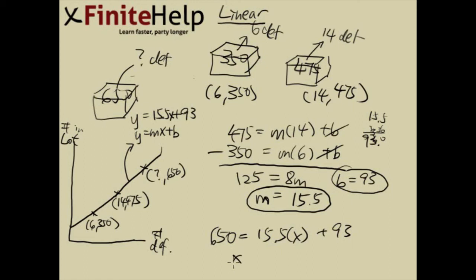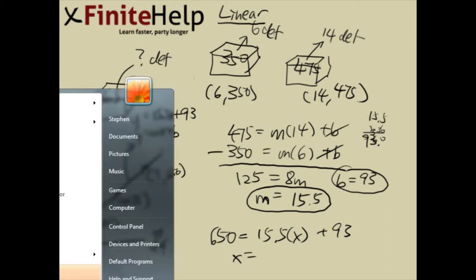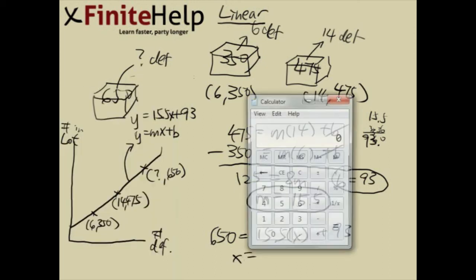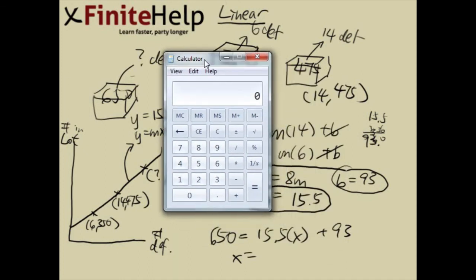Here x is going to be 650 minus 93 over, and then divide 15.5 over. Here we have 35.94.